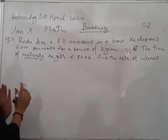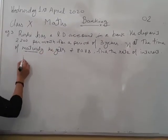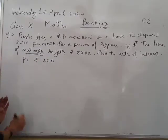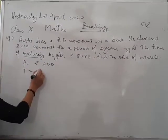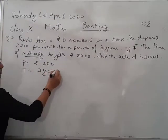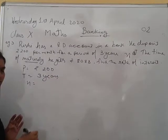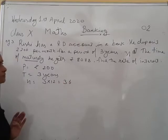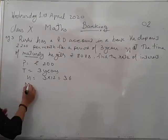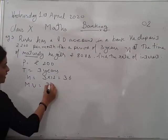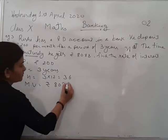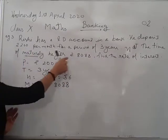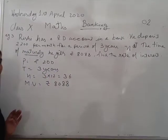What is given to you, you write it first. Principle is given to you, Rs. 200. Time is 3 years. It means the number of installments will be 3 into 12, which is 36. And maturity value is given to you, Rs. 8088. Now here in the question it is given maturity value is Rs. 8088, that's why I have written maturity value is this one.